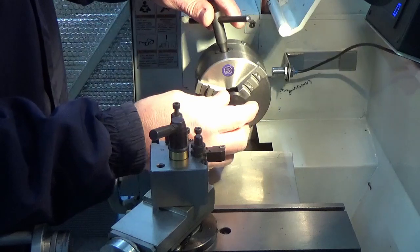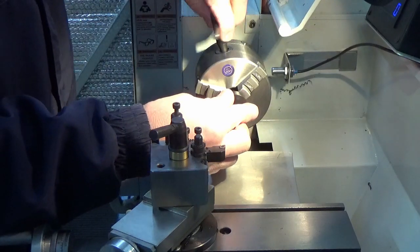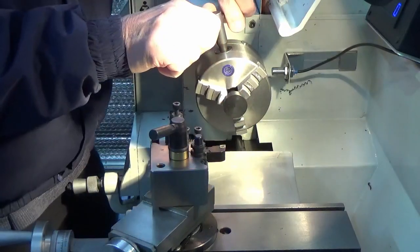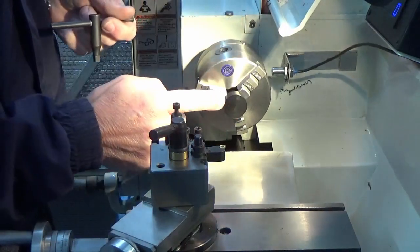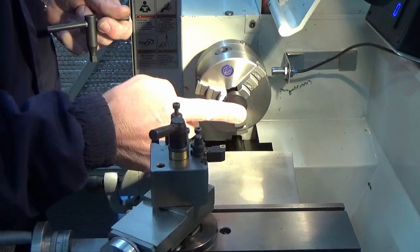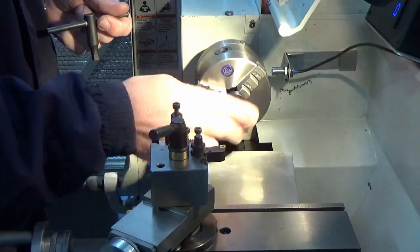So what we're doing here is we just turn them around. We're just going to face off the top of them and bring that down to 5mm, and then just round off that edge again.